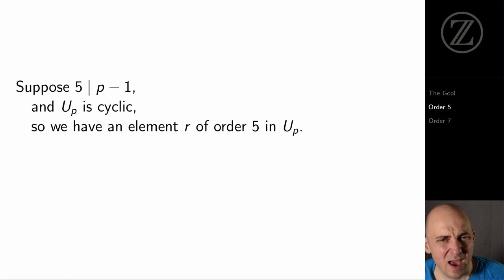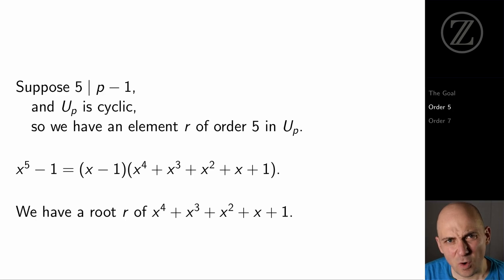Suppose that p is prime and that 5 divides p minus 1. So that could be like p equals 11, p equals 31. And U_p, the units mod p, that's cyclic. And consequently, if 5 divides p minus 1, then there is actually an element of order 5 in U_p. The polynomial x to the 5th minus 1, that factors as x minus 1 times x to the 4th plus x cubed plus x squared plus x plus 1.